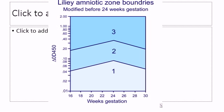Zone 3 requires either delivery at 34 weeks of gestation or PUBS, percutaneous umbilical blood sample and hematocrit level, and intrauterine blood transfusion if the hematocrit is less than 30%. Zone 2 requires follow-up every two weeks. Zone 1 requires follow-up every three weeks.